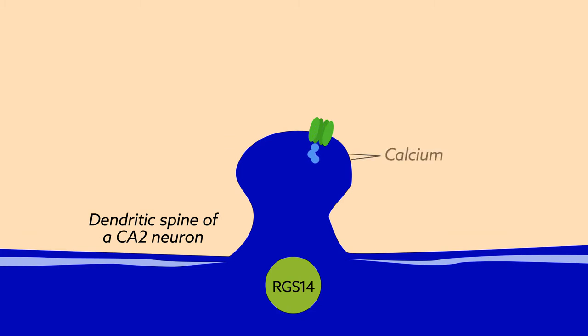Having confirmed a role for calcium-driven signaling in the nascent plasticity of CA2 neurons lacking RGS14, the team next investigated the role of calcium flux in the diminished plasticity of wild-type CA2 neurons.